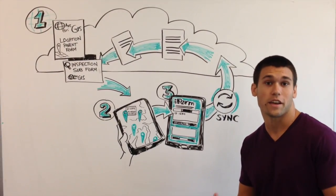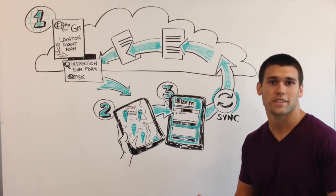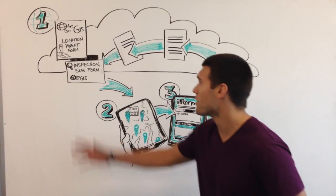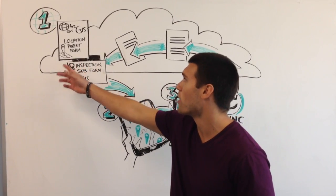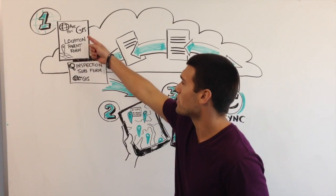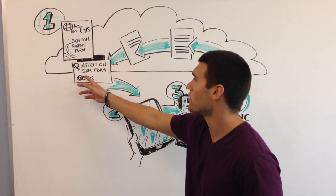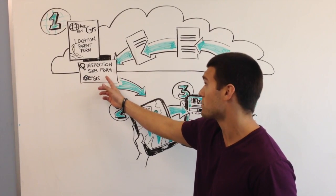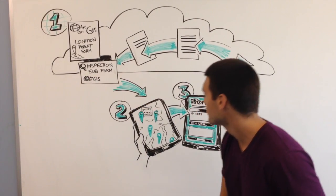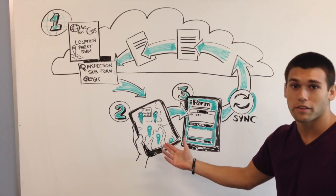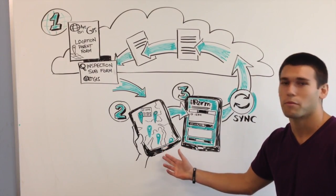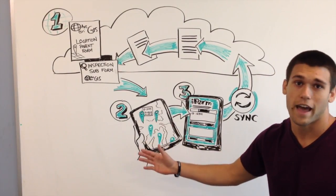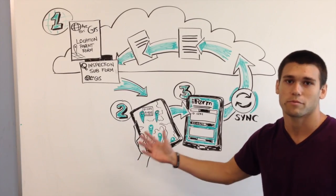They want to actually capture a lot of data on specific assets out in the field. What we've designed here is that you have your ESRI structure in step one. We have our list of locations and our related table, which has all the inspections for that specific table. Each one of these dots on the map represents a different asset they want to capture inspections on.